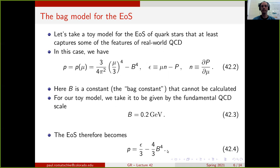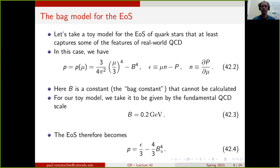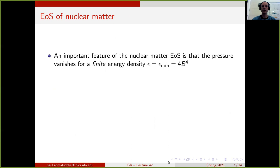The bag model equation of state becomes P = epsilon/3 minus a constant. This is an important feature: the pressure becomes zero when the energy density is small enough that the right-hand side cancels, which happens at a finite minimum energy density equal to four times B to the fourth power. This matches a feature of nuclear matter, where the minimum energy density is also finite — numerically about one baryon per cubic femtometer — consistent with plugging in our value of the bag constant.